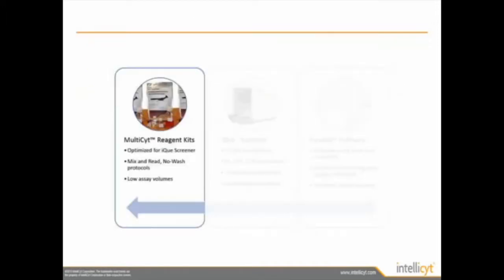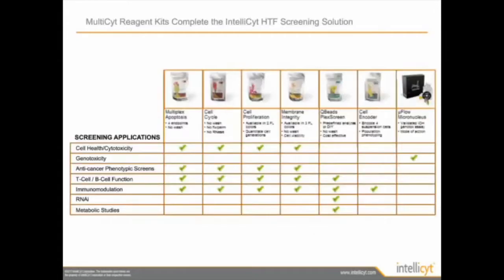The last component IntelliSite has to offer are the multi-site reagent kits. These kits are fully optimized for the IQ Screener. Most are mix-and-read, no-wash protocol, and have very low assay volume, saving on samples. The kits offer a wide range of screening applications like cell health, genotox, T-cell/B-cell function, and immunomodulation. Our kits and reagents include apoptosis, cell cycle, cell proliferation, membrane integrity, Q-Beats to look at cytokine secretion, cell encoder for barcoding cells, and micronucleus.